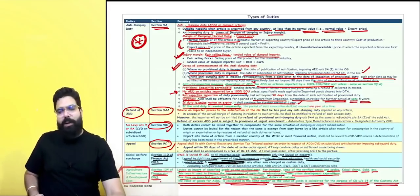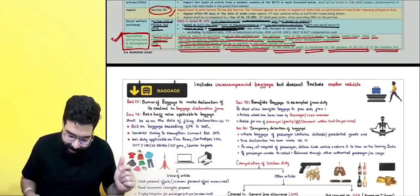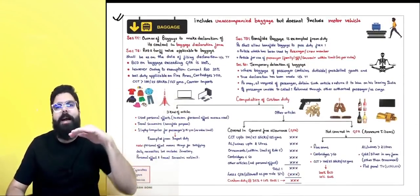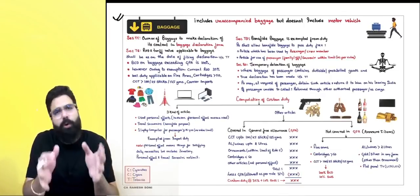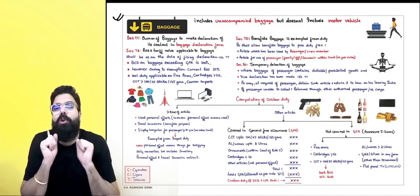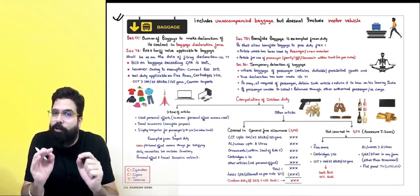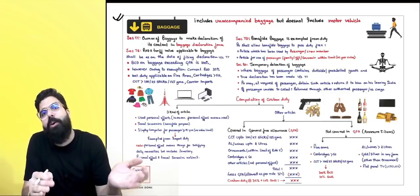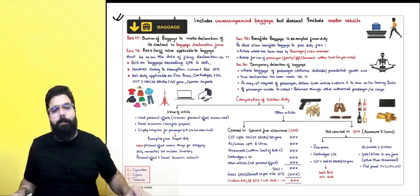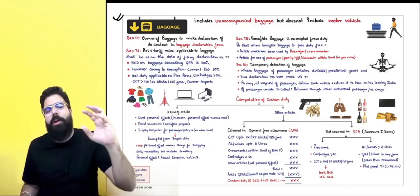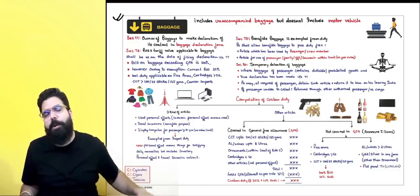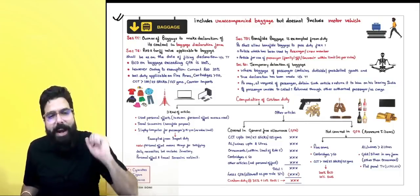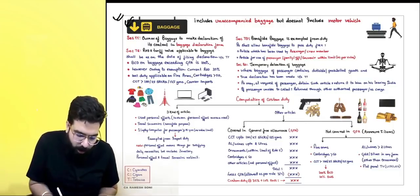The next chapter we are going to revise is the chapter of baggage. Whenever people go out of the country and come back, they bring along a lot of goods. The government decided that goods coming in baggage should also be taxed, so custom duty is levied on baggage at one uniform rate of 35% plus 10% social welfare surcharge.